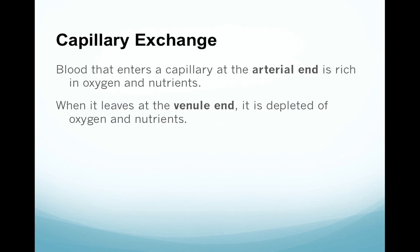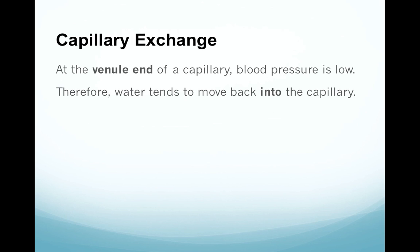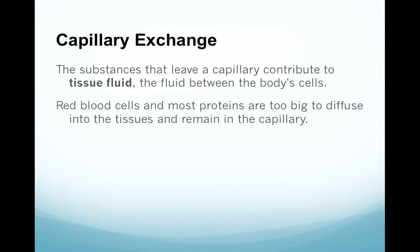Blood that enters the capillary at the arterial end is very rich in oxygen and nutrients. When it leaves at the venous end, it's depleted of those oxygen and nutrients. At the arterial end of the capillary bed, blood pressure is quite high, so it actually forces out water and nutrients that exit the capillary and get to the cells and intercellular fluid. At the venous end, blood pressure is much lower, so water tends to move back into the capillaries, but it leaves behind the oxygen, nutrients, and everything the cell needs. Red blood cells and most proteins are too big to diffuse into the tissue, so they stay in the capillary.